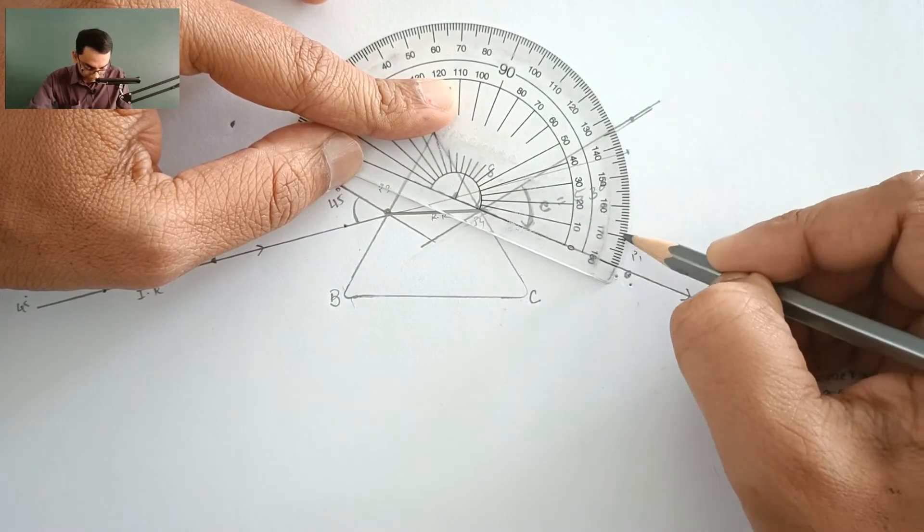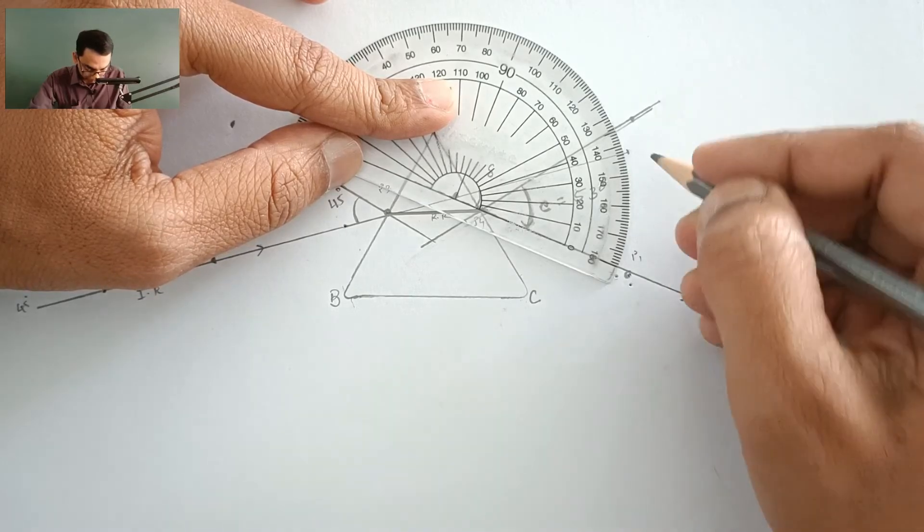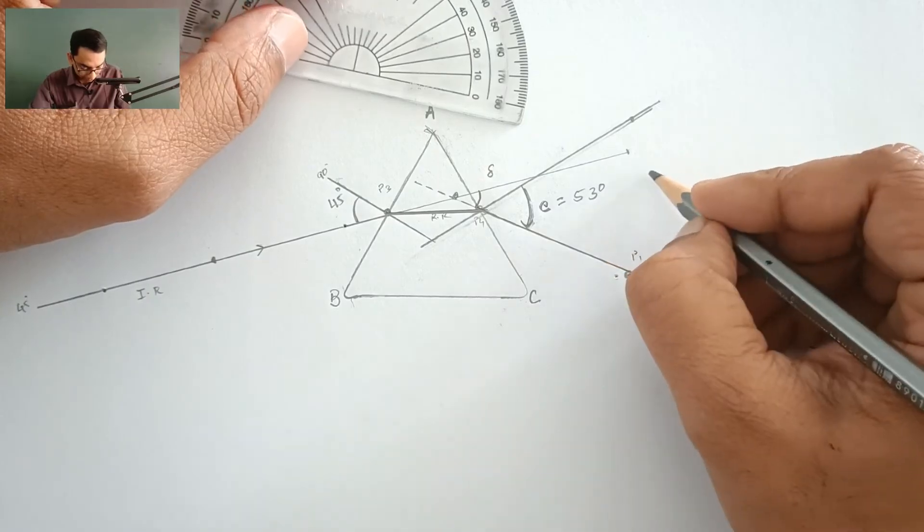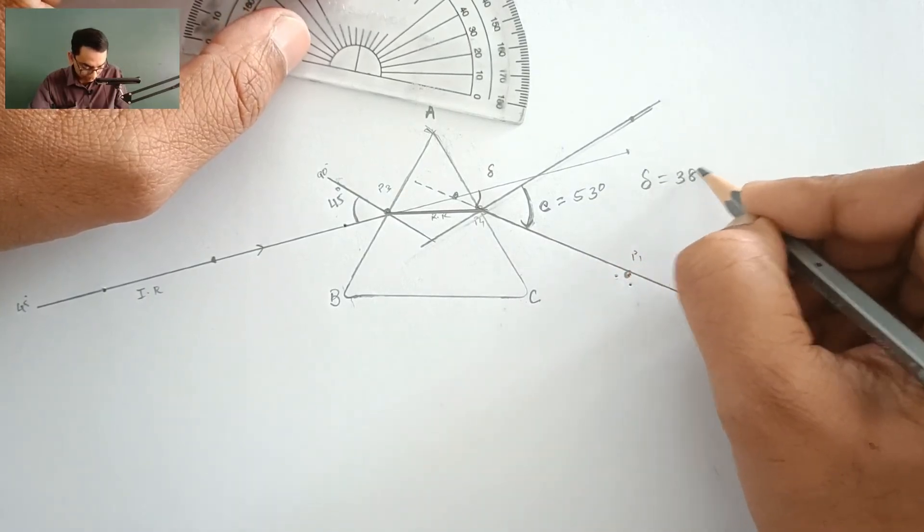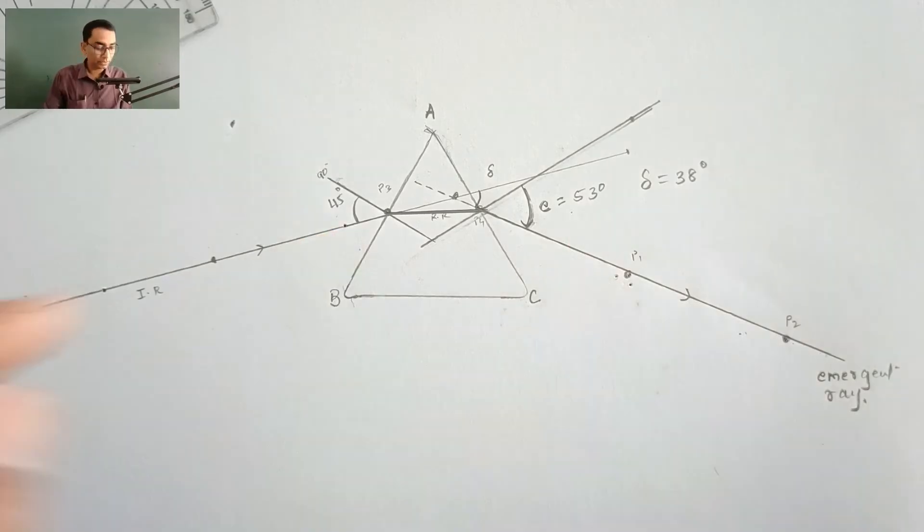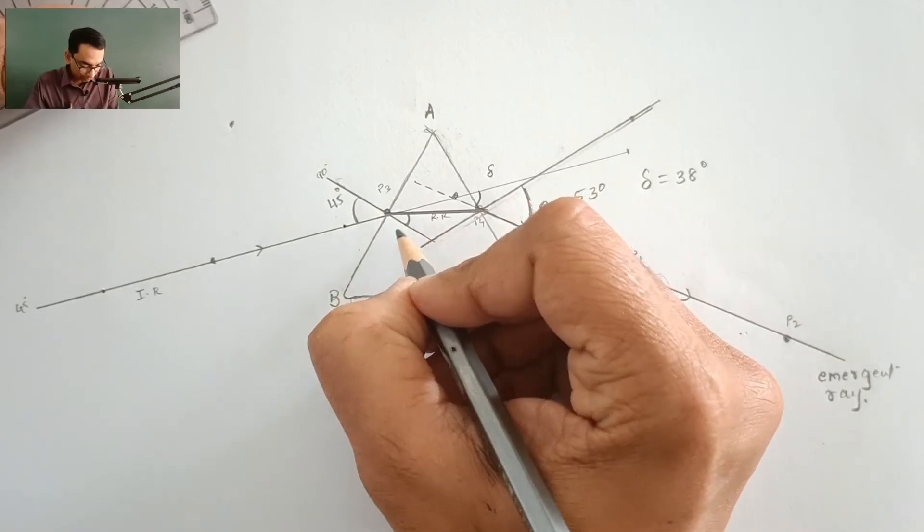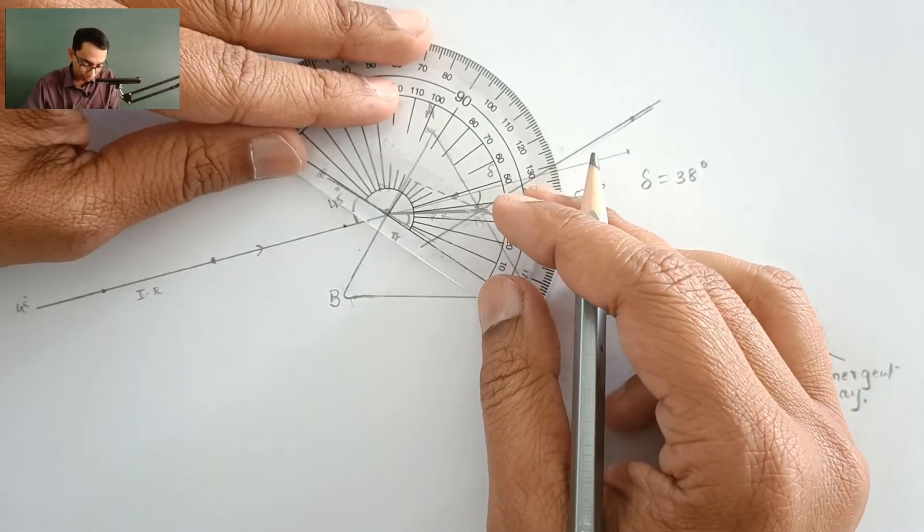So from here to here, this is 10 degrees, 20 degrees, 30 degrees and this is somewhere around 38 degrees. So the angle of deviation is roughly 38 degrees and please understand that I and E are not equal. Now I am just going to write down all the angles over here. This would be our angle of refraction. Let us measure that too.